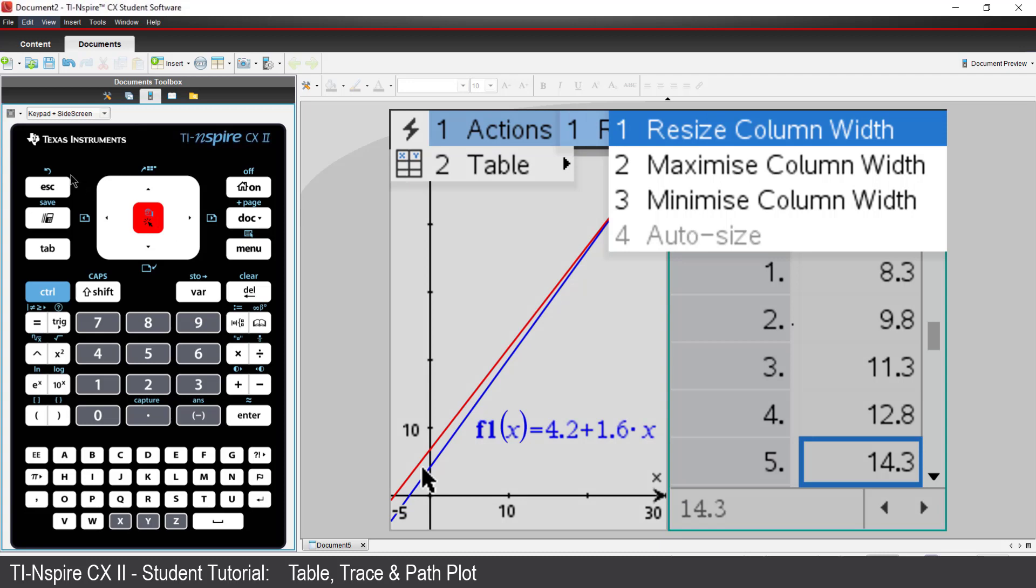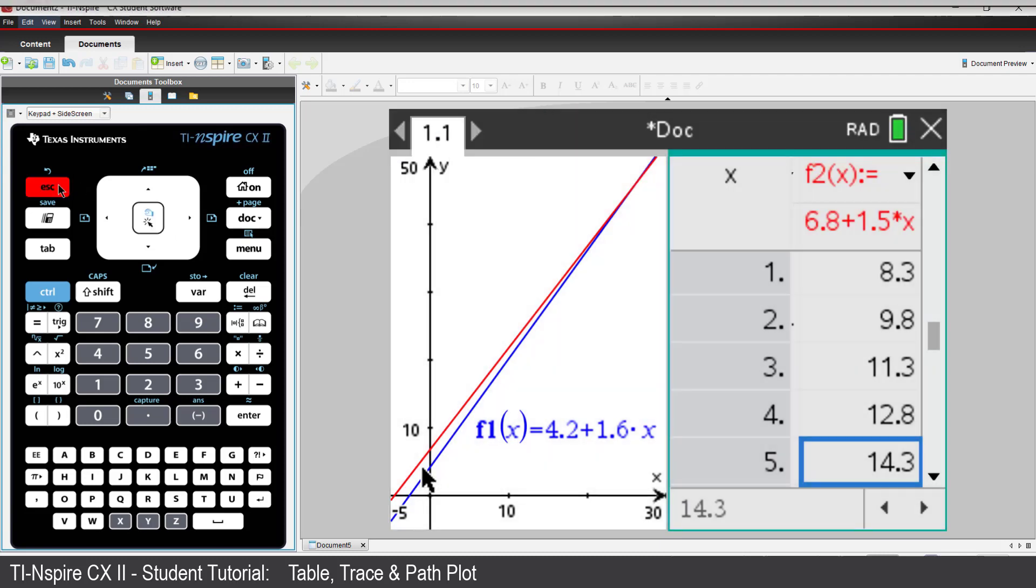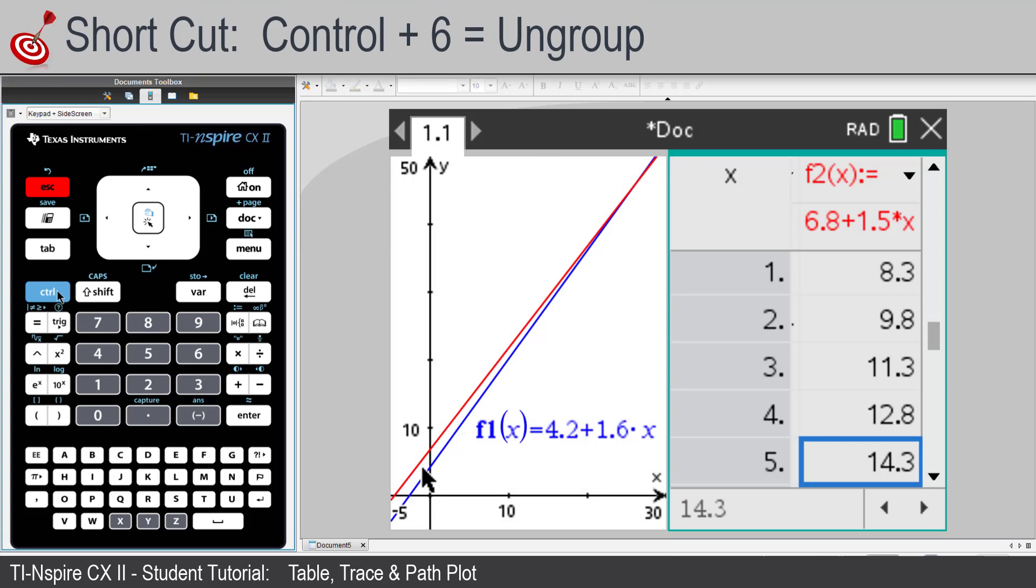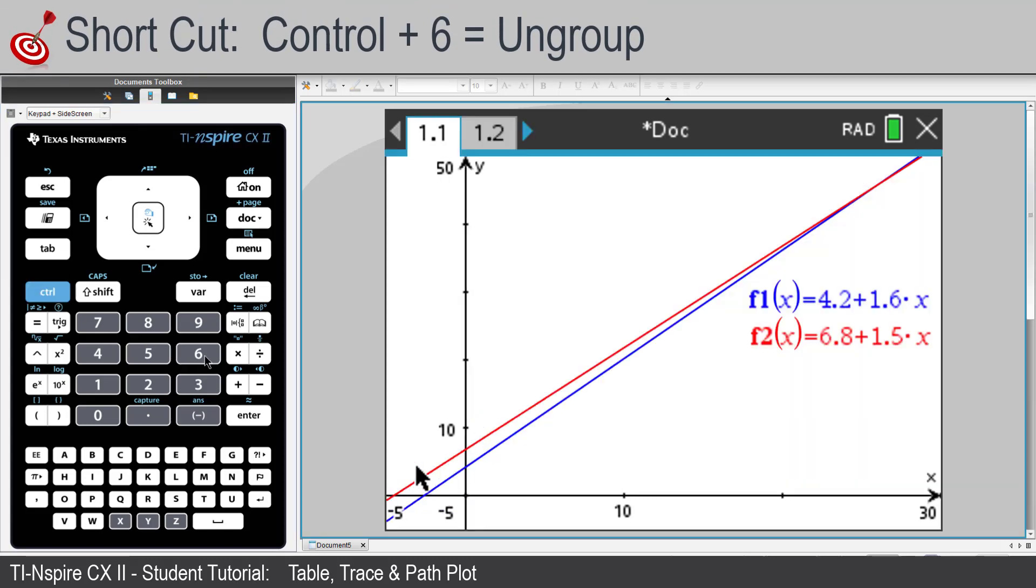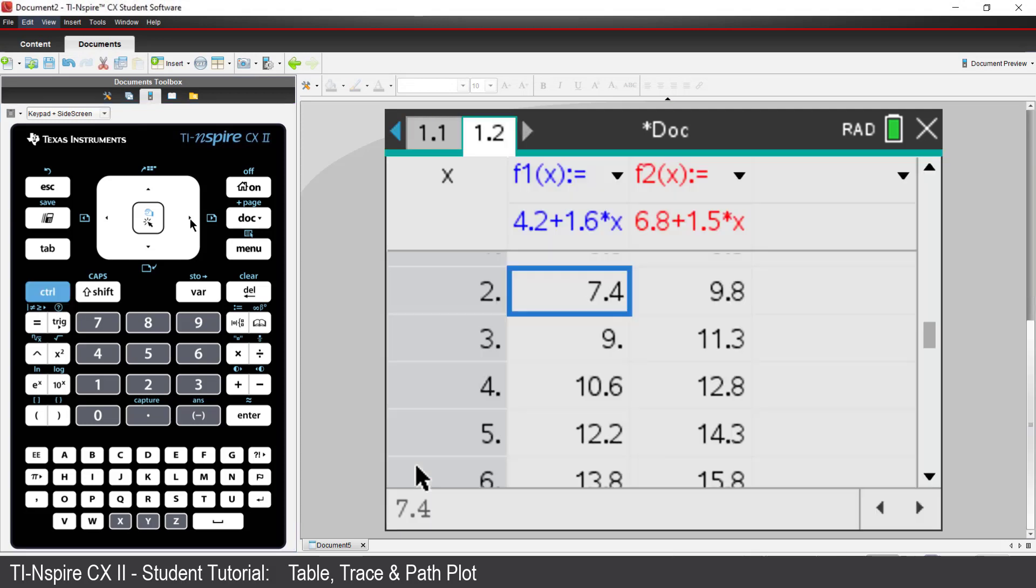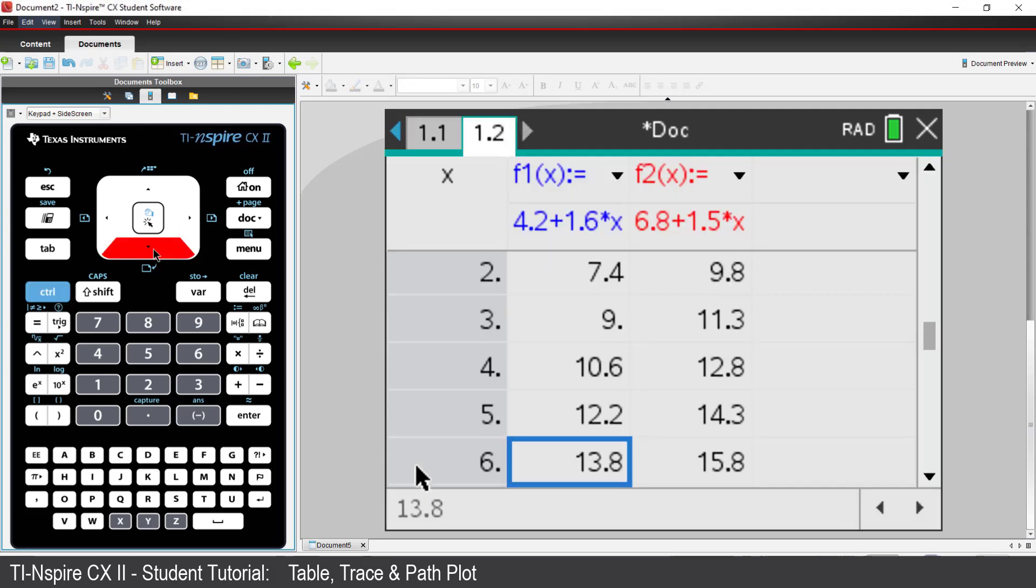Or, put the table on a separate page by pressing CTRL followed by 6 to ungroup the graph and table. Navigate to the next page. Now we can see both sets of prices side by side.